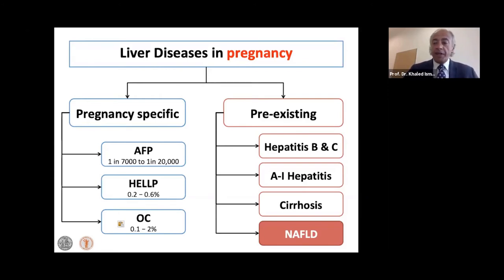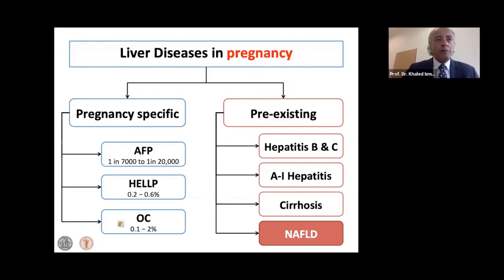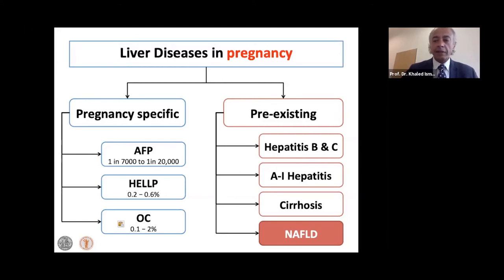The prevalence of AFLP ranges between 1 in 7,000 to 1 in 20,000. So in a very busy maternity unit delivering 10,000 to 15,000 babies a year, doctors might see one case of AFLP every one or two years. Hence, very few obstetricians will have actually seen a case — we think about it and worry about it a lot, and do investigations for it, but we would rarely see it in our professional life unless you are at a liver tertiary referral center.